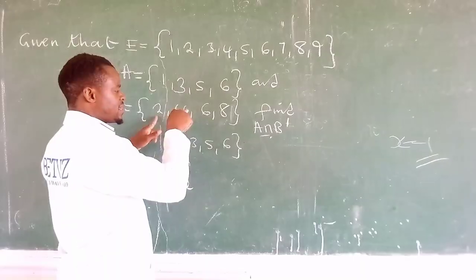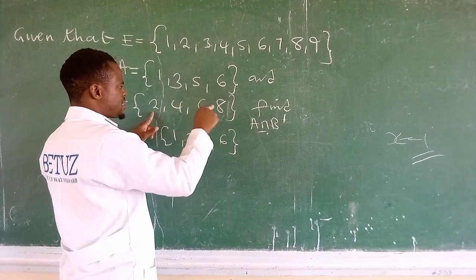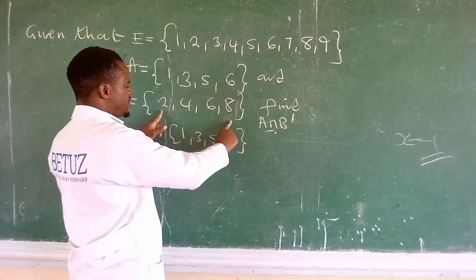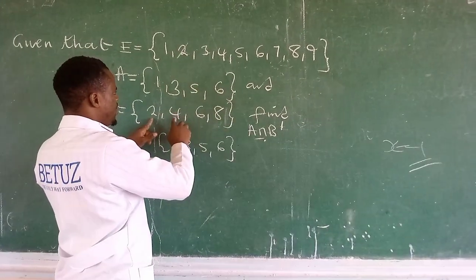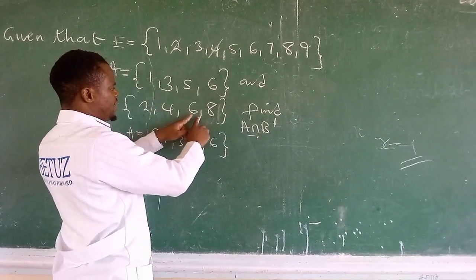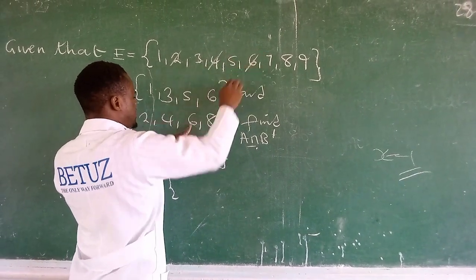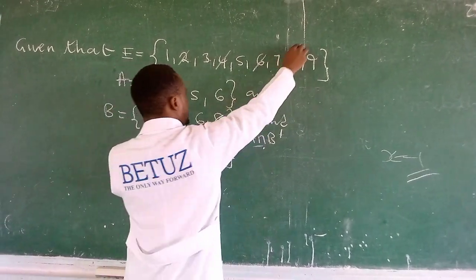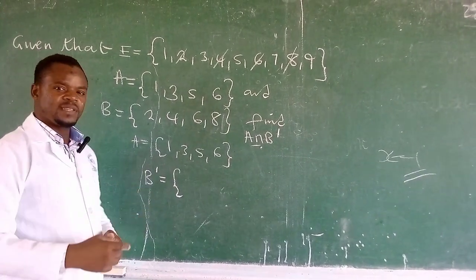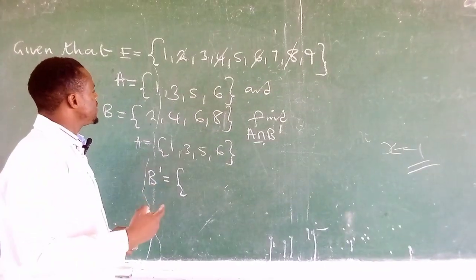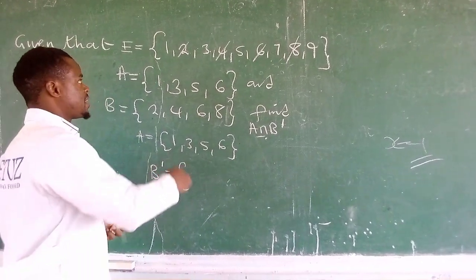on the universal set and check which elements are not in set B. We have a 2... 2 is there. We have a 4... 4 is there. We have a 6... 6 is there. 8... 8 is there. Now those that I haven't cancelled are actually the elements that are not there in set B.